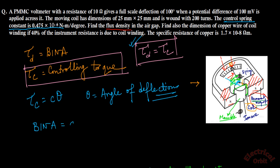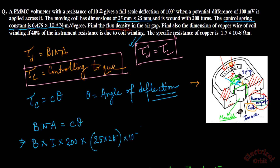We can now write B × I × N × A = C × θ and substitute the values. B is unknown. N is 200 turns, and the dimension of the moving coil is 25 × 25 millimeters, which must be converted to meters by multiplying by 10⁻⁶. The value of C is 0.475 × 10⁻⁶, and θ is 100 degrees.